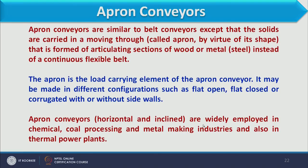Side walls are walls attached along the sides of the apron that move with it, preventing material from falling off the edges. Apron conveyors, both horizontal and inclined, are widely employed in chemical, coal processing, and metal-making industries as well as in thermal power plants, transporting not only raw materials but also finished items.